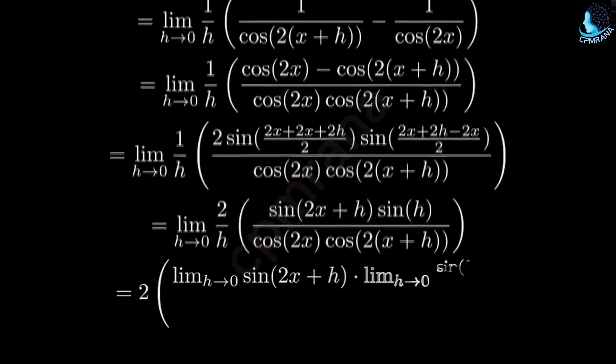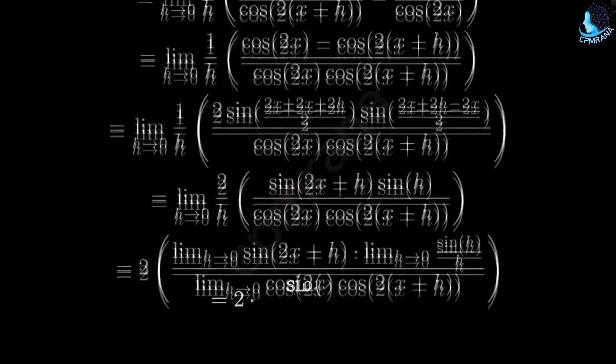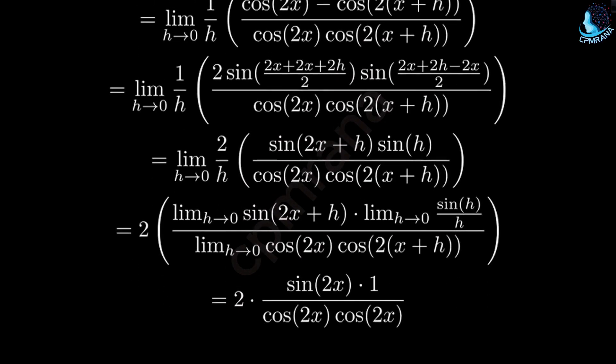We can split this into separate limits. The limit of sine of 2x plus h as h approaches 0 is sine of 2x. The limit of sine h over h as h approaches 0 is 1, and the limit of cosine of 2x plus h is cosine of 2x.